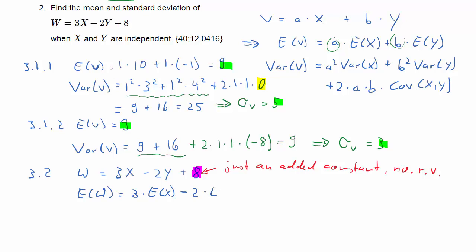The expected value of W is 3 times the expected value of X minus 2 times the expected value of Y plus 8, that constant. We just need to plug in our values for expected value of X, which was 10, expected value of Y, which was -1, and do the calculations. We have 30 plus 2 plus 8. That's 40.